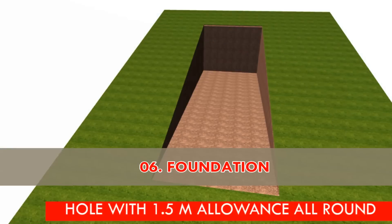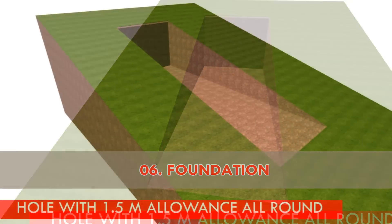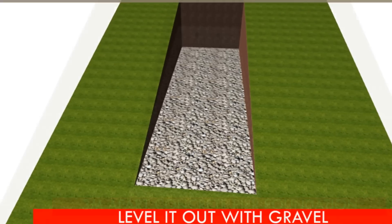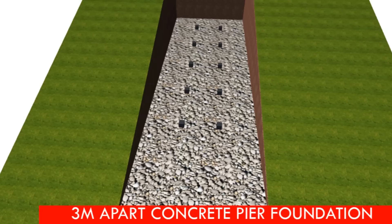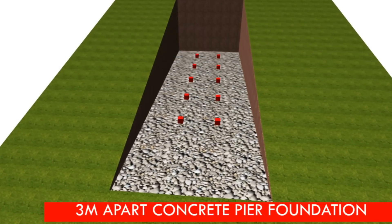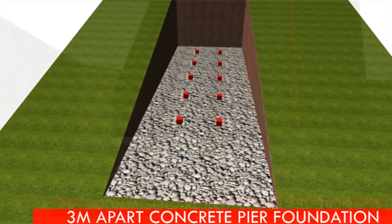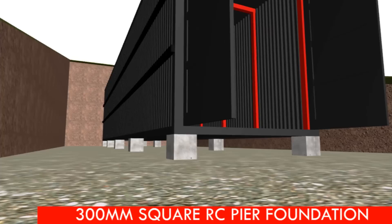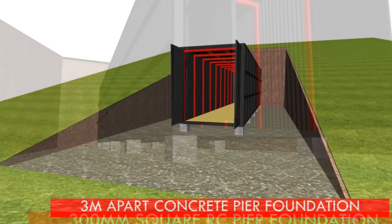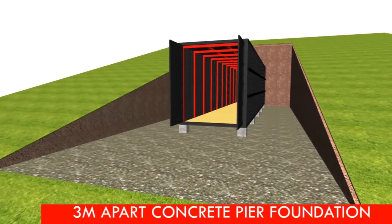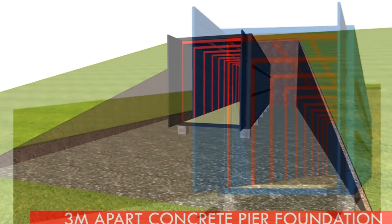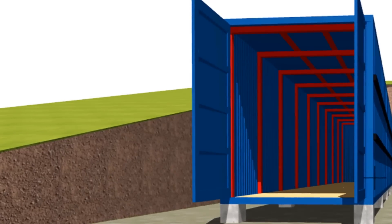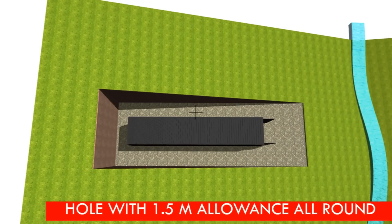Once the containers are structurally reinforced and waterproofed, prepare a foundation. Dig a hole providing at least 1.5 meters wide working allowance all around the container. Once you find stable ground, level it with gravel for good drainage. Mark out and cast reinforced concrete piers — eight 300mm square concrete piers spaced three meters apart center to center, elevated 300mm above the gravel level. A raft foundation is also a good alternative. Place the containers on the foundation with the cargo doors facing the exposed facade as the main entrance.